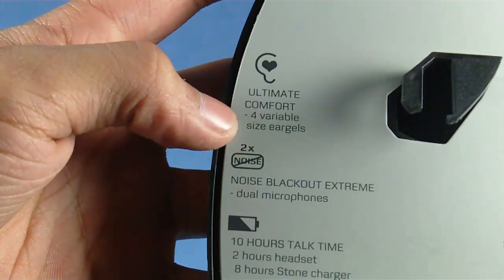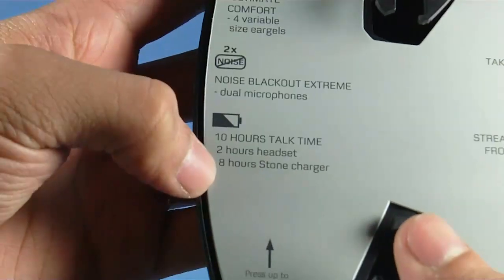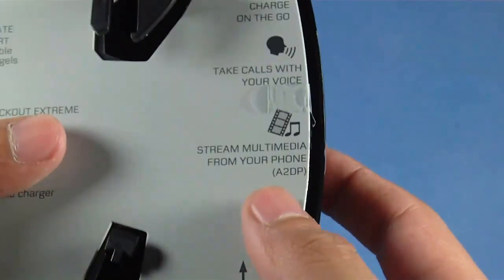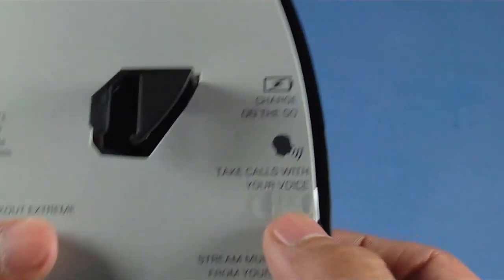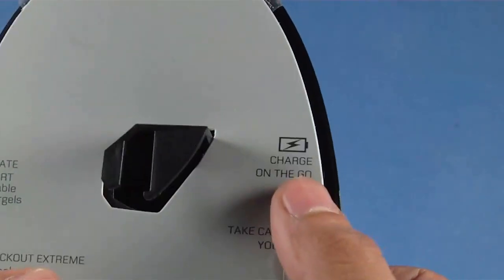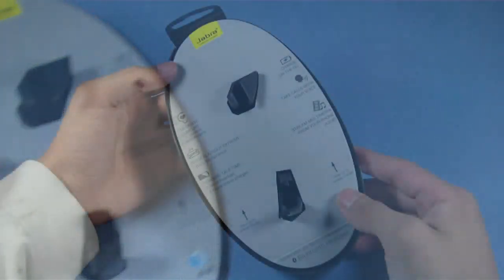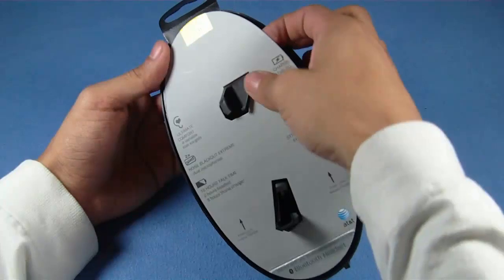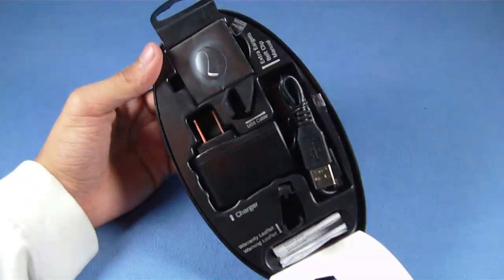Some of the features include ultimate comfort with four different earpieces, noise blackout extreme, 10 hours of talk time. You can stream music straight to the headset. You can take calls with your voice, and you can charge on the go. Also, underneath where the headset and the stone come, it looks like we have a few extra goodies.